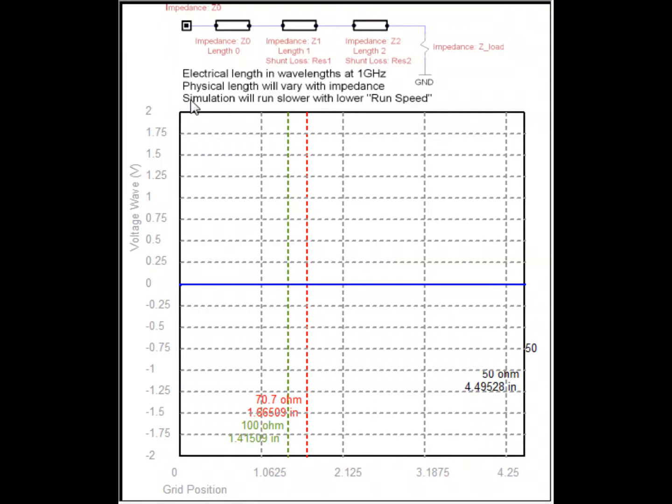Here, I'm using WaveMason to model three transmission lines again into a terminating resistor. This time, from the previous video, I'm reversing the order of impedances. So I'm going from the higher impedance to the lower impedance.